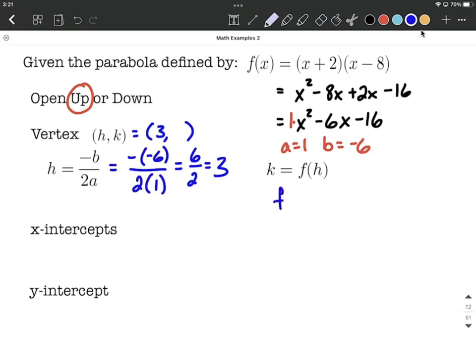So we can say f of 3 is going to be 3 plus 2, and then 3 minus 8. We're going to combine what's inside the parentheses first. So 3 plus 2 makes 5, 3 minus 8 makes negative 5, and then finally we'll multiply these together and get negative 25 for the y value for our vertex.